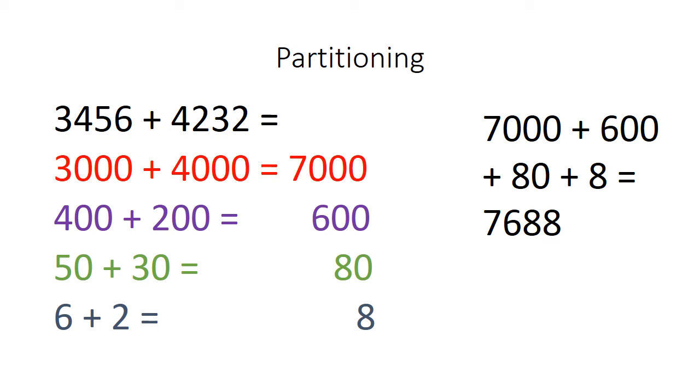I can easily figure out that 3000 add 4000 is 7000. I also know that 400 add 200 is 600. I can easily work out that 50 add 30 is 80, and I know that 6 add 2 is 8.